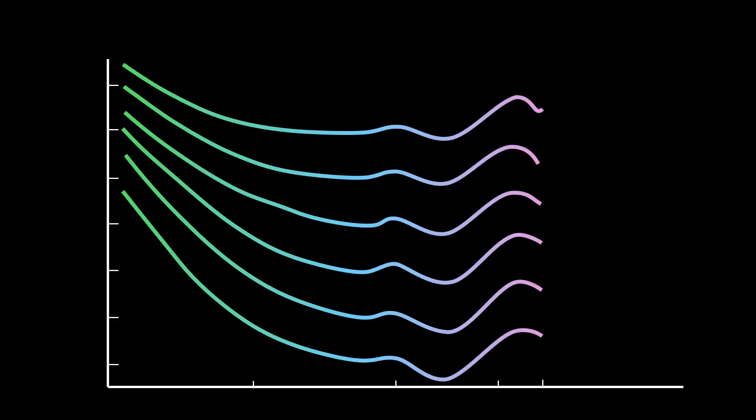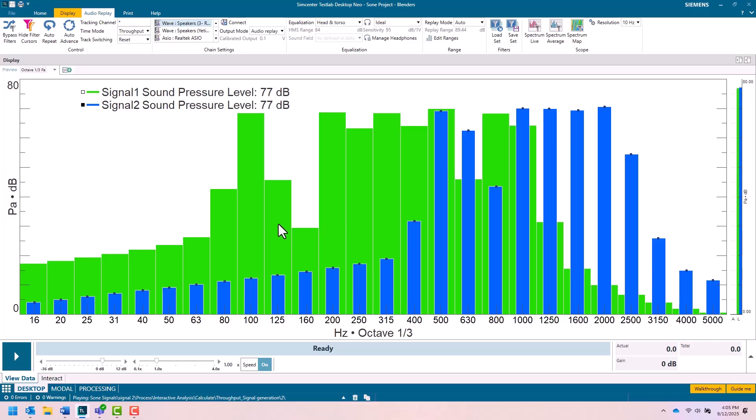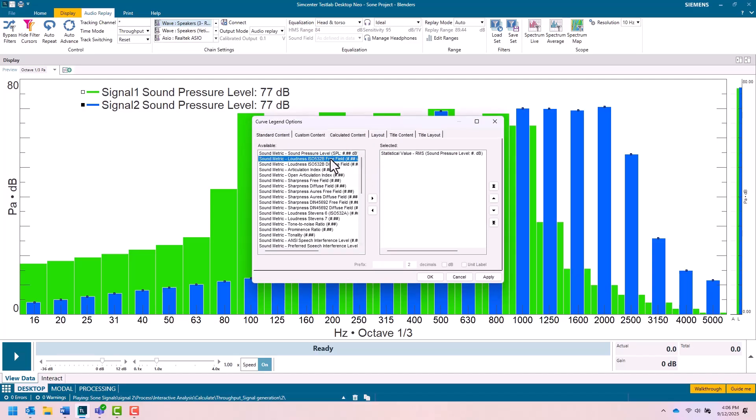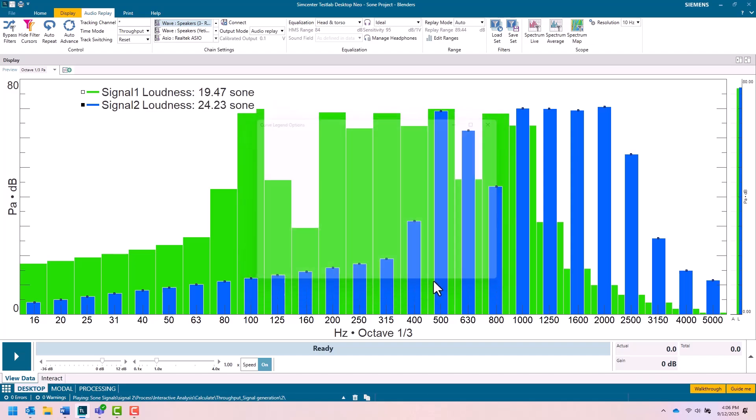Remember those two signals I played in the beginning? Well, they had the exact same decibel value. But for fun, let's take a look at their sone value or their subjective loudness, the way humans hear it. We can see that the first signal had a sone value of 19.4, and the second signal had a sone value of 24.2. Even though they are the same, we hear them differently. And the second signal has a higher subjective loudness than the first. Now, I did this on purpose because I've picked specific frequencies that sound louder to people. We'll go over those in a minute.